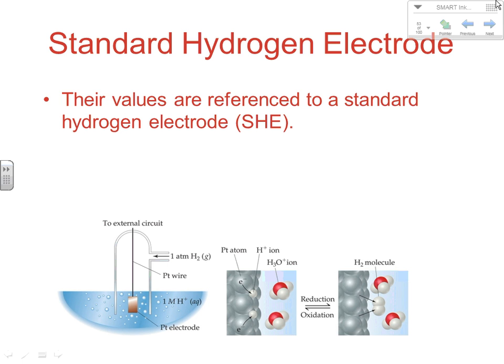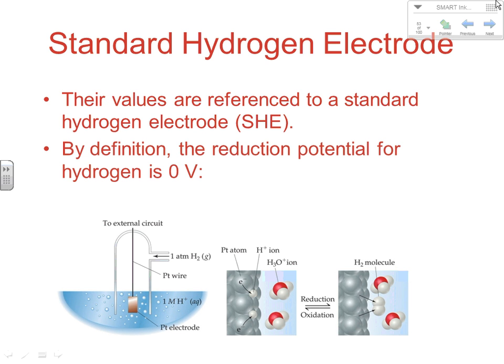All of the numbers we look at are listed as reduction reactions. So even if it's an oxidation reaction, you'll notice you're looking at it as a reduction reaction. They're all comparative values to the hydrogen electrode. By definition, the reduction potential for the hydrogen electrode is set to zero. The reaction is: 2H⁺ + 2e⁻ → H₂ at one atmosphere pressure. We compare everything to this half cell under these conditions to establish all the half-cell reduction potentials for the other reactions.